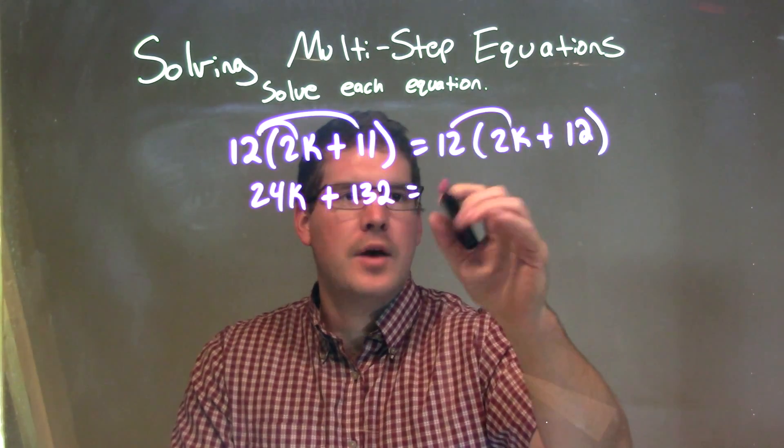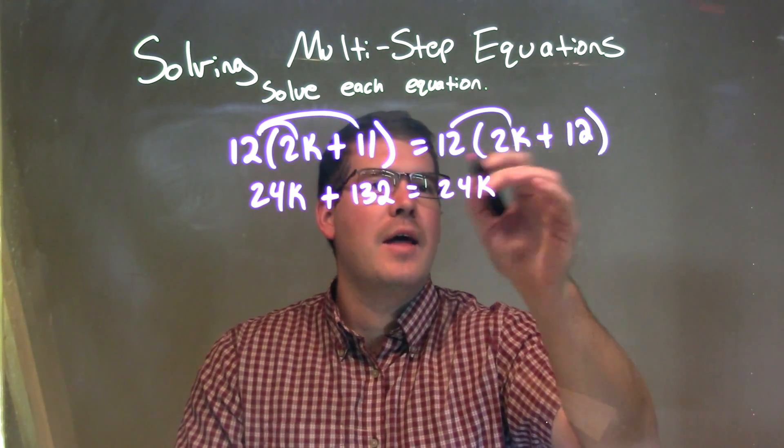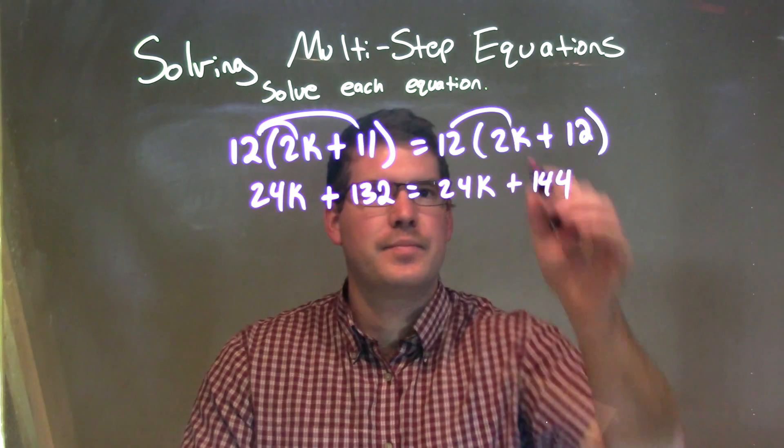That's equal to 12 times 2k, which is 24k. Let's distribute this 12 again. And 12 times 12 is 144.